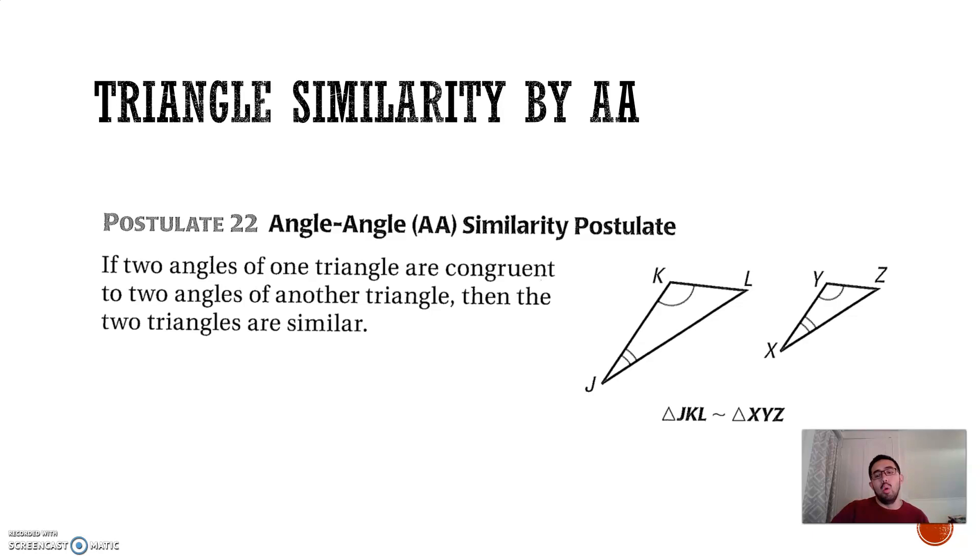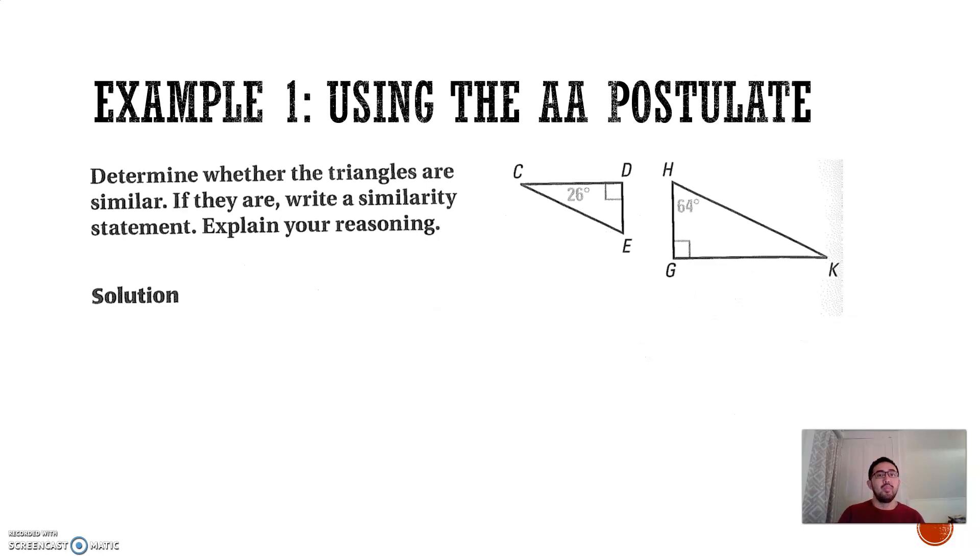Now how do we know this? Well, technically, if you have this angle J is congruent to angle X, and K is congruent to Y, then we also know that L must be congruent to Z. Why? Because all three angles must equal to 180, and if these two are equal and these two are equal, then L and Z must also be equal. Therefore, since all the angles are equal, then the two triangles must be similar. This is something that we learned earlier. If all three angles in two separate triangles are the same, then that means that the two triangles are similar.